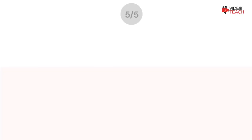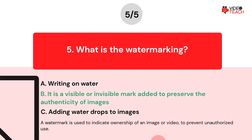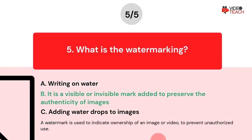The correct answer is Option B. A watermark is used to indicate ownership of an image or video to prevent unauthorized use.